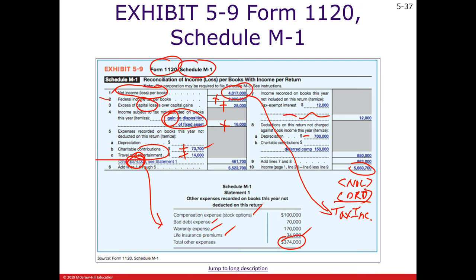On the right-hand side column, tax-exempt interest is still reported as income on the income statement but is subtracted out on the tax return. Depreciation — especially with bonus depreciation and the Section 179 deduction — accelerates depreciation in the early years, so we take more depreciation deduction on the tax return. Deferred compensation is generally deducted on the tax return when paid or incurred, versus being accrued over the employee's work life on the income statement. We come down to this figure, and you still subtract out the net operating loss and the dividend received deduction, as reported on page 1 of the 1120, to arrive at taxable income also on page 1.